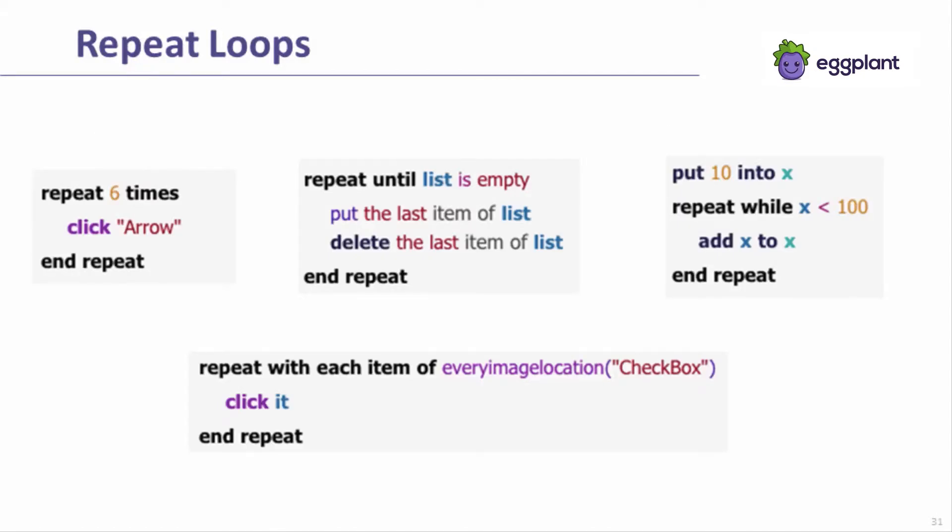There are several types of repeat loops that repeat based on different types of conditions. Note how these different repeat loops begin with repeat and end with end repeat. The simplest repeat loops allow you to repeat a set of statements a given number of times or for a given period of time. Some of the most powerful repeat loops repeat according to chunks such as items in a list, or until certain conditions such as an image being visible on the screen of the SUT are met. Later, I'll discuss using repeat loops in the context of scrolling reliably on the SUT, or iterating through a set of objects on the screen.